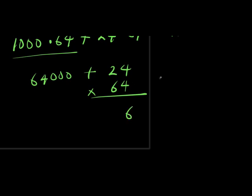So 4 times 4 is 16, 4 times 2 is 8, 8 plus 1, that is 9. Then I have 6 times 4, that is 24, I have 4 times 2, 6 times 2, that is 12 plus 2, that is 14.